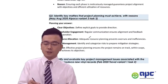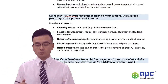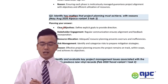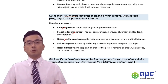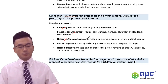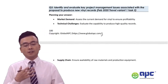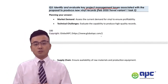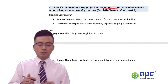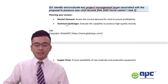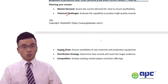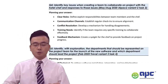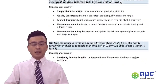A second past question asked to identify key matters that project planning must achieve with reasons — for example, having a clear objective, engaging with stakeholders, allocating resources including budget, and managing risks properly. Always link back to the case. A third question asked to identify and evaluate key project management issues associated with a new product — including technical challenges and supply chain issues when working with suppliers. Review past exams to see how this topic has been tested.